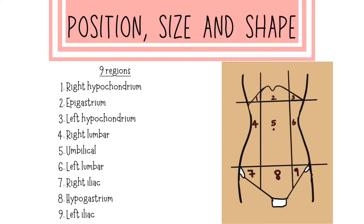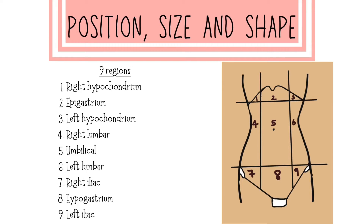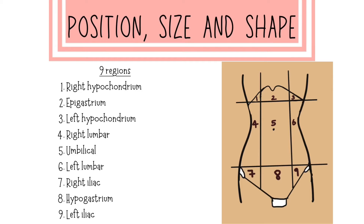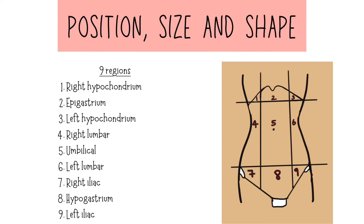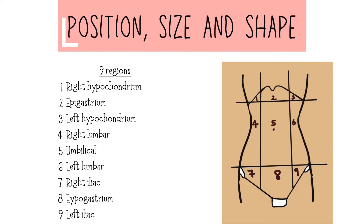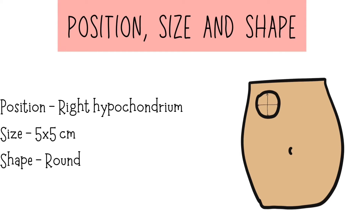With this division, the abdomen is divided into nine regions: number one is right hypochondrium, two is epigastrium, three is left hypochondrium, four is right lumbar, five is umbilical, six is left lumbar, seven is right iliac, eight is hypogastrium, and nine is left iliac. For example, a lump present in the area shown would be in approximately the right hypochondrium.